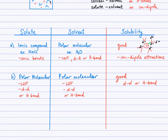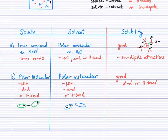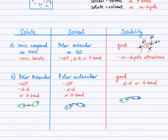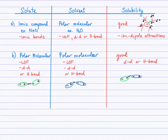If a solute particle — let's say drawn in green — has its partially positive end attracting the partially negative end of another molecule, we have a polar interaction. Using blue circles to represent the solvent particles, because these are also polar molecules, we have the same types of interactions happening. The green solute particle and the blue solvent particle, both polar, can interact well through the same dipole-dipole or hydrogen bonding that existed between the solute and solvent particles themselves. Both ionic compounds and polar molecular solutes dissolve well in polar solvents.